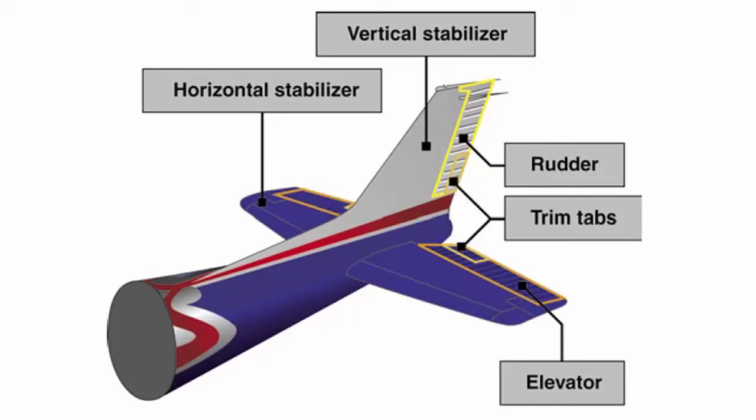The empennage includes the entire tail group and consists of the vertical stabilizer, the horizontal stabilizer, the rudder, elevator, and one or more trim tabs. The rudder is attached to the back of the vertical stabilizer. During flight, it is used to move the airplane's nose left and right.